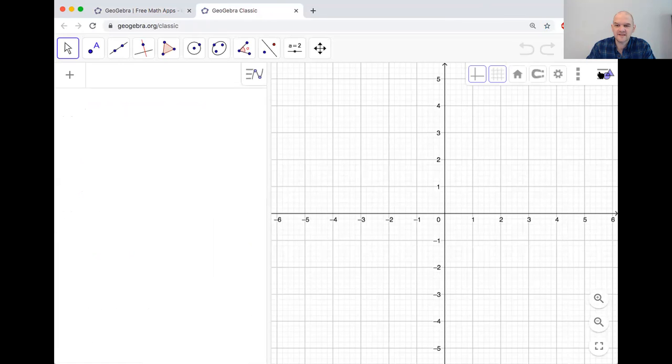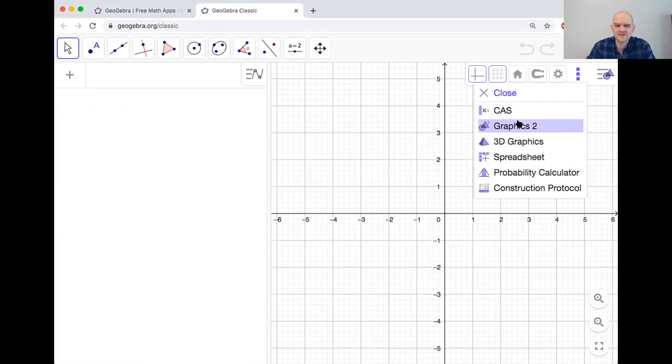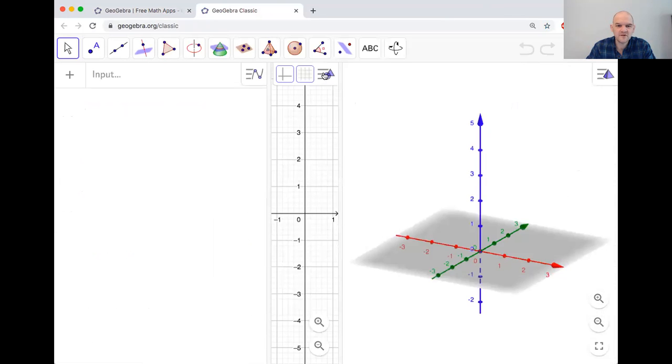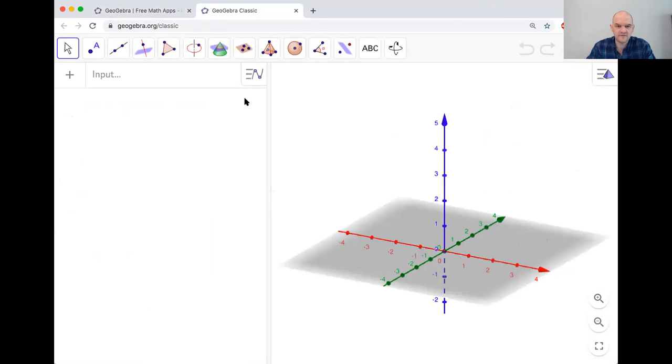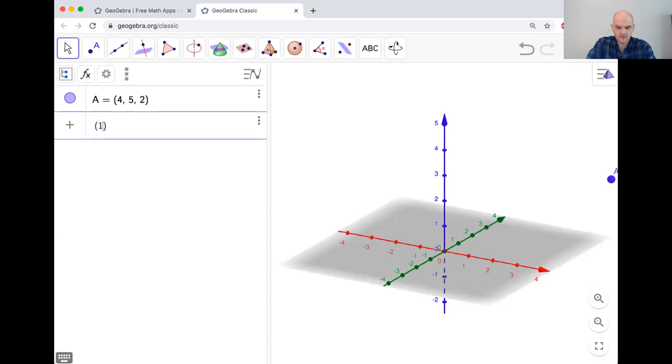Choose GeoGebra Classic—it gives you all the options. If you don't choose Classic, you don't have all the options. When you get here, you need to turn on the 3D parts. I click here, turn on 3D graphics. You can drag this and turn off things you don't need.